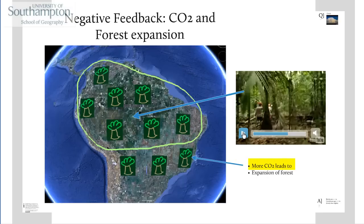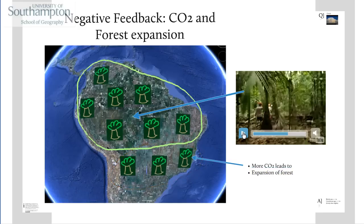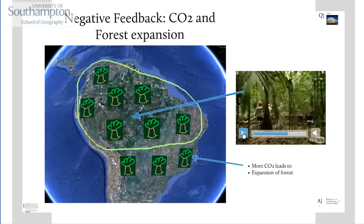If the carbon dioxide increases, then trees find it easier to grow, because trees breathe carbon dioxide in the same way that we breathe oxygen. So what happens is they extend their area outside into areas where they didn't live before, and within the forest they already occupy there'll be more trees per square kilometre. So effectively, if carbon dioxide increases, more trees grow and they capture the carbon dioxide. And if carbon dioxide decreases, fewer trees grow and they release carbon dioxide when they die. So we've got negative feedback in this system.